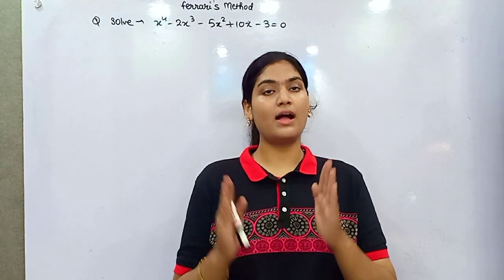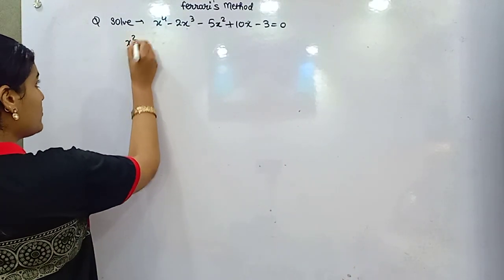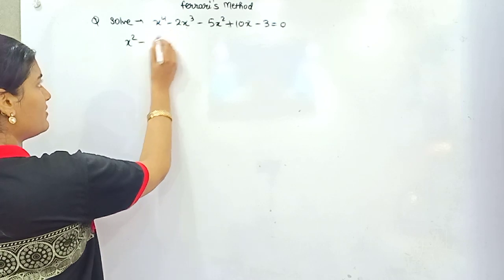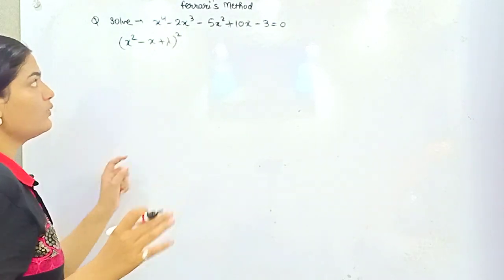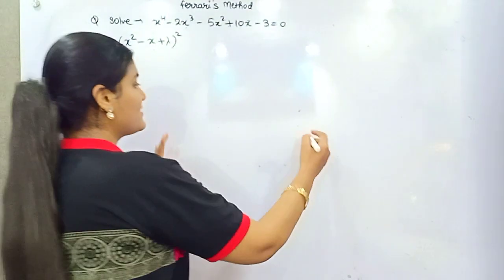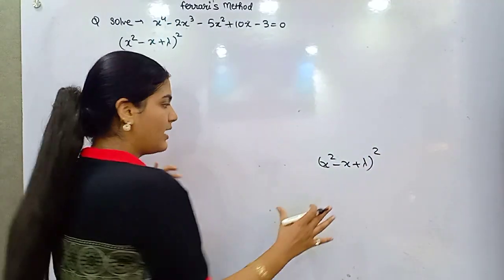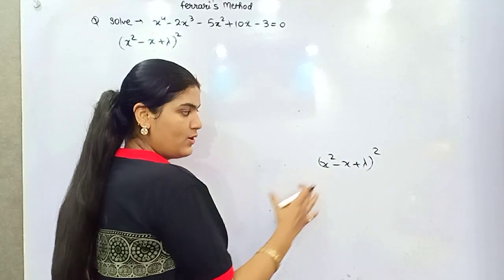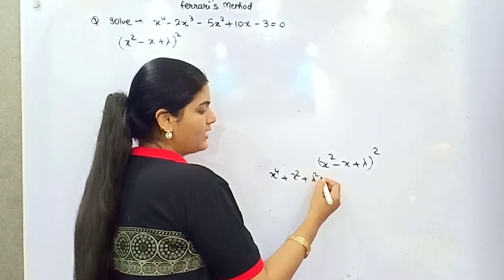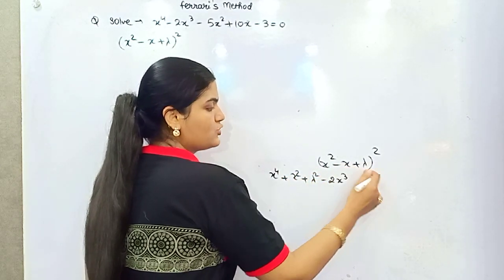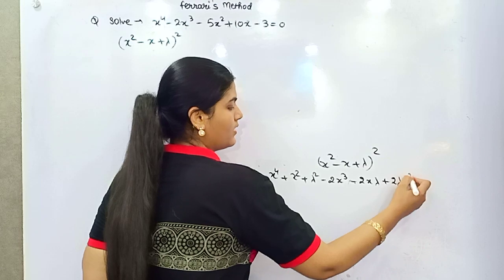...you need to consider another bi-quadratic equation of the form x squared plus half of the coefficient — so half of 2 is 1 — x plus lambda, whole squared. Now because you have taken this, it can be expanded using the identity (a + b + c)² = a² + b² + c² + 2ab + 2bc + 2ca.